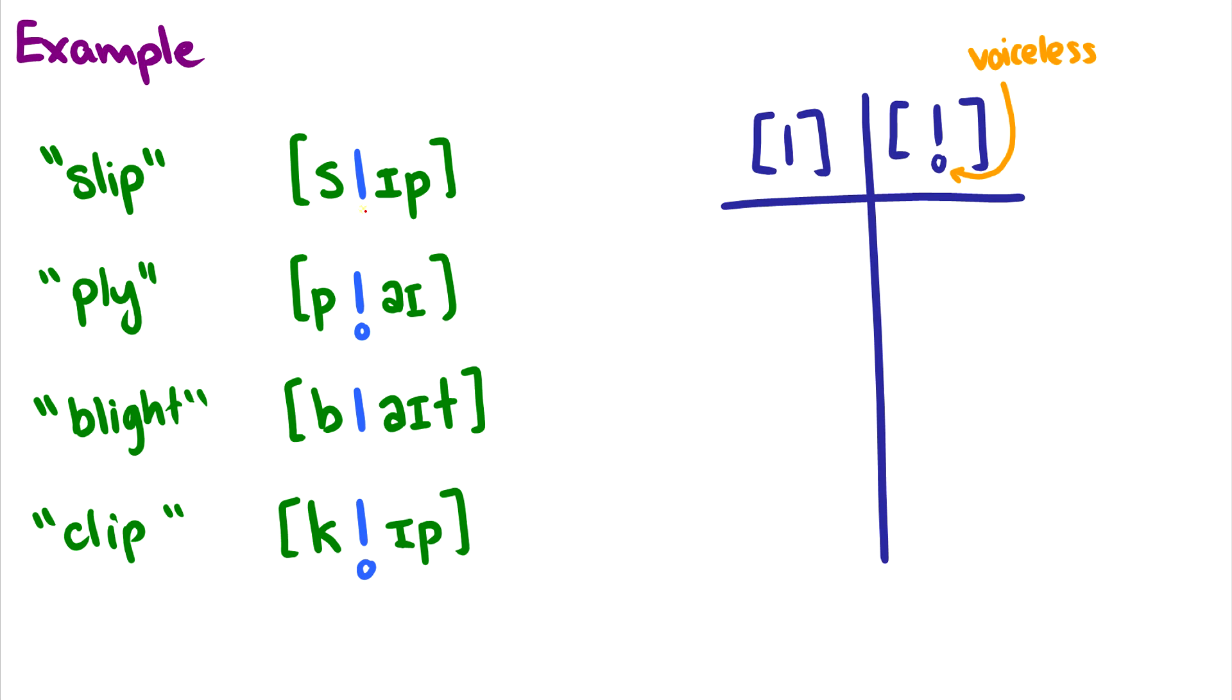So for instance, in the first word slip, I have a regular voiced L. So I can put an S, and then I can put a blank space for where my L occurs, and then I can put I. So basically I'm saying the L occurs between S and I. In the word blight, it occurs after a B and before the I. Now the voiceless one, well the voiceless one occurs after a P and before I, and in clip it occurs after a K and before an I.